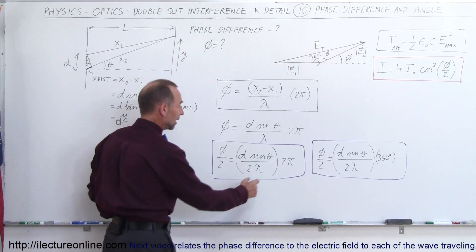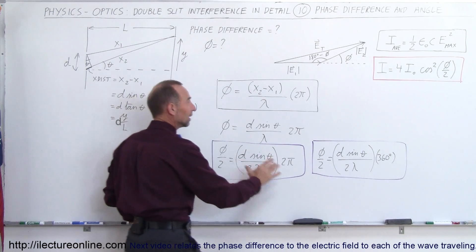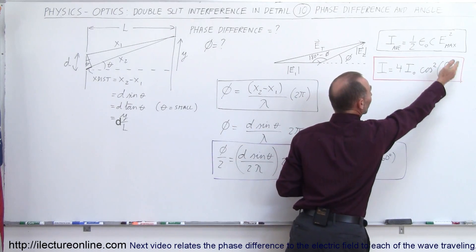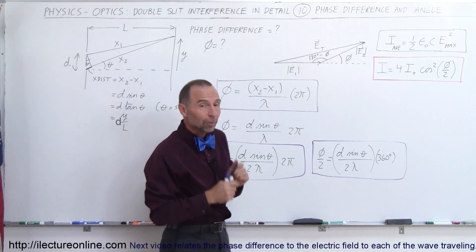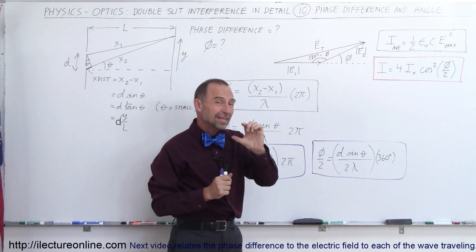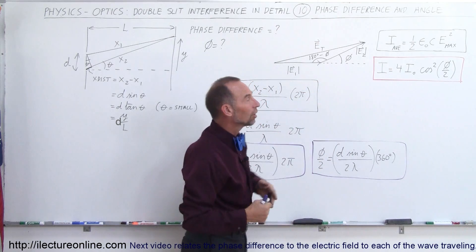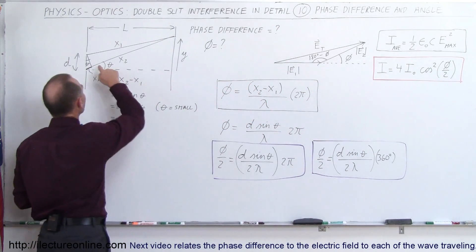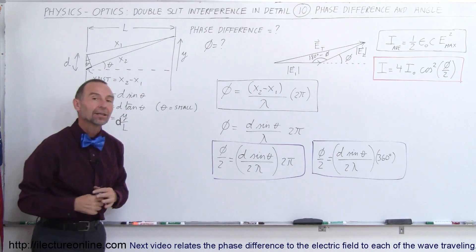And that's how you find the relationship between theta and phi, and that's how you can then express phi in terms of theta. Plug it into this equation, so if you don't know phi, you don't know what the phase difference is, but you do know what the angle is, you know what d is, you know what the wavelength is, then you can use that to find the intensity at any point along the screen as a function of theta rather than as a function of phi. And that's very handy to know.